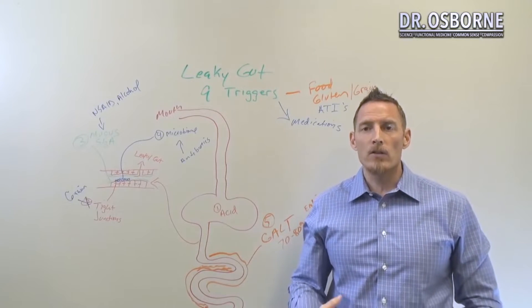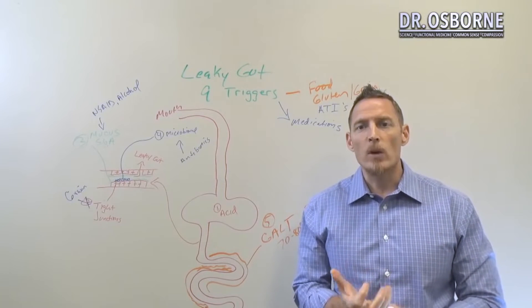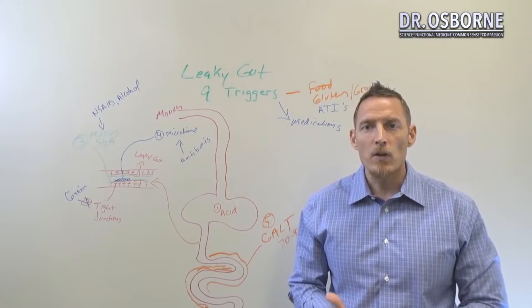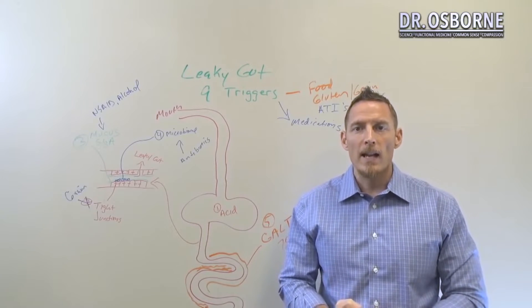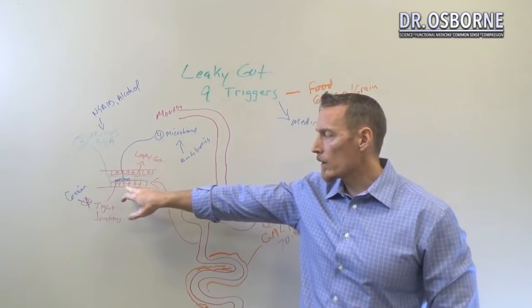And the people that generally will see this with are the ones that when they eat potato, they have a lot of joint pain or muscle stiffness or aches. So if you find that when you get potato and it creates pain and stiffness, it's probably because the glycoalkaloids